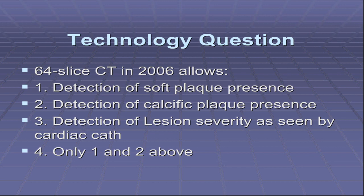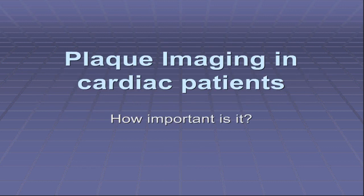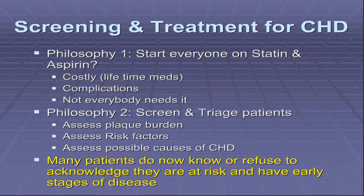We'll see if this changes or remains the same at the end of the lecture. Plaque imaging — how important is it to look at plaque when you evaluate cardiac patients? That brings up the real question: how do you triage patients with supposed or presumed cardiac disease? We know the traditional approach when patients present to the cardiologist or in the ER is to look at traditional risk factors, Framingham risk factors, and all of that, and then come up with some sort of treatment.